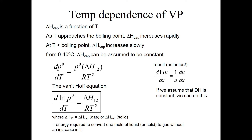It turns out that delta H of vaporization is a function of temperature — it actually changes as a function of temperature. As you approach the boiling point of the chemical, delta H of vaporization can increase pretty rapidly. But at temperatures well below the boiling point, delta H of vaporization increases very slowly. For the most part, you can consider it to be constant over the kinds of temperatures we experience here on earth — roughly between zero and 40 degrees Celsius — so you can assume that delta H of vaporization is constant over that small temperature range.